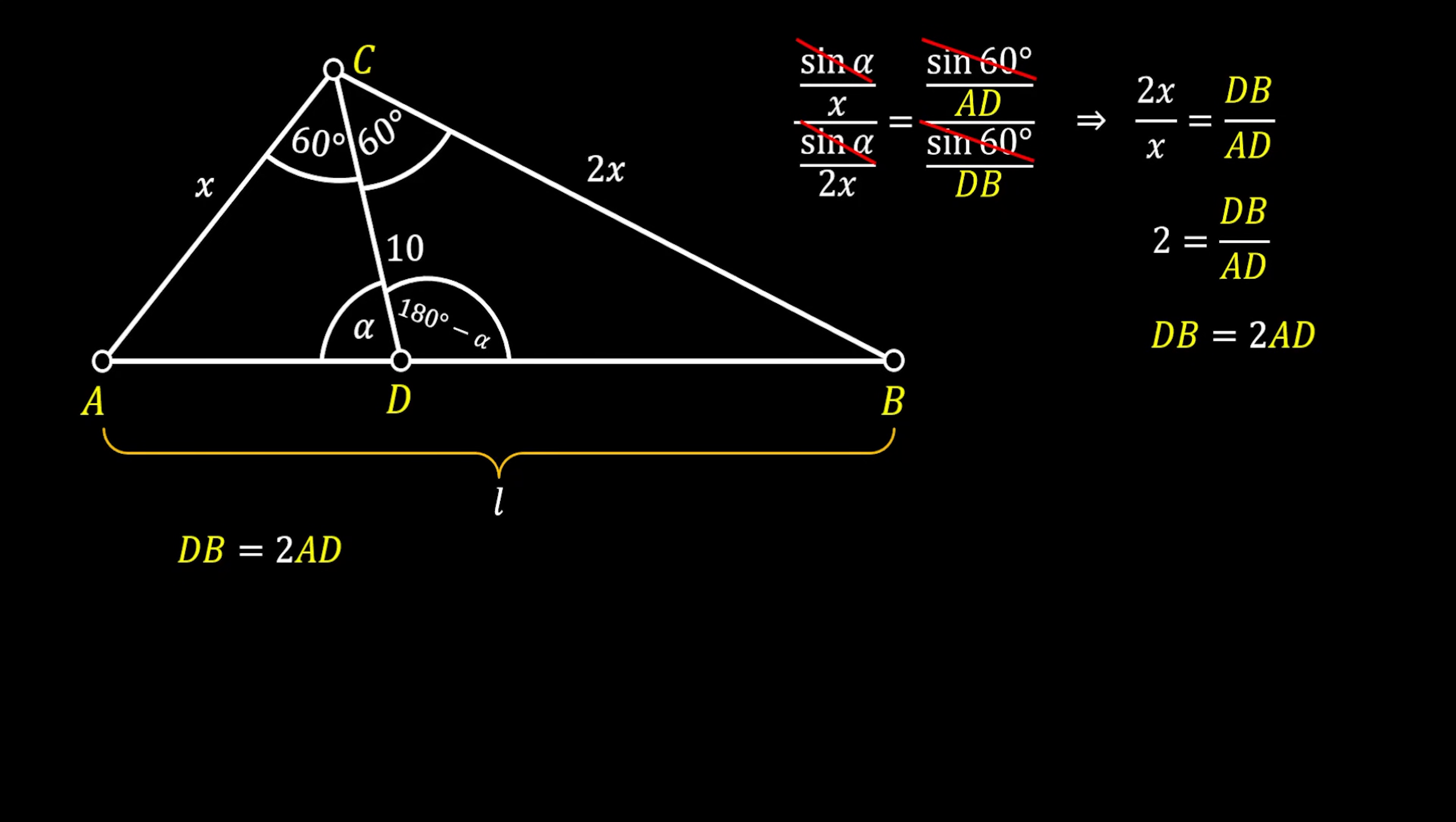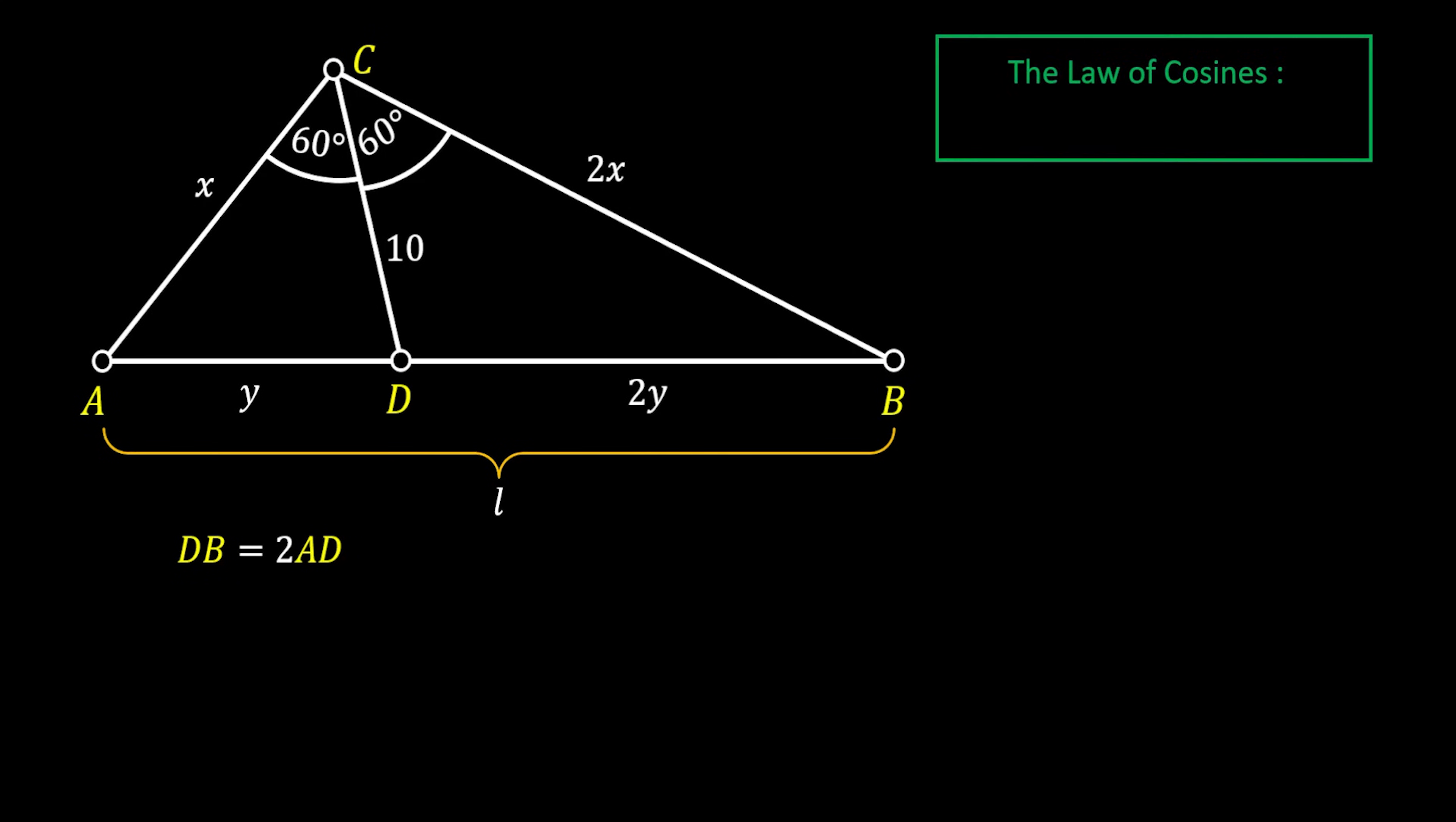Alright, so now let's go ahead and label the side AD as Y and DB as 2Y. Now we will ask trigonometry to help us once more. We will now use the law of cosines. Just as a quick reminder, this law states that the square of any side of the triangle equals to the sum of the squares of the other two sides minus 2 times the product of those sides times the cosine of angle in between those two sides.